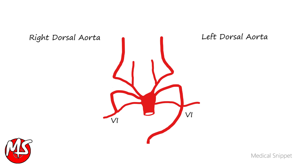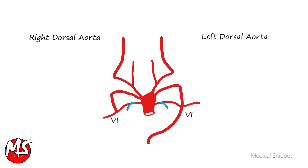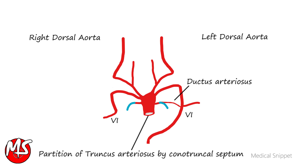The sixth aortic arch is also called the pulmonary arch. The distal portion of the pulmonary arteries arises from buds of the sixth arch, which grow into the developing lungs. The proximal portion of the pulmonary arteries develops from the proximal part of the sixth aortic arch. The distal portion of the sixth arch on the right side disappears, and on the left side persists to form the ductus arteriosus.